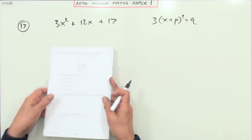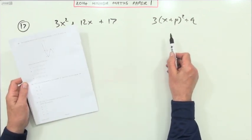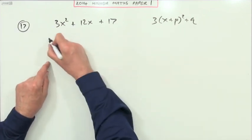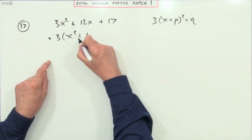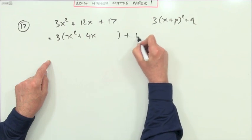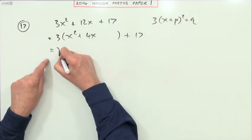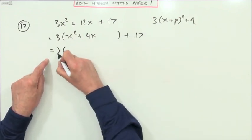Number 17, complete the square. Watch which one they're asking for—they're asking for q, the number at the end. The first thing to do here is take the 3 out, so that's 3 times x squared and 3 times 4x. I'm not interested in that 17, it's this part I'm going to complete into a square.